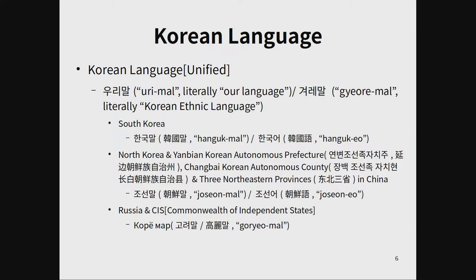Korean language is called 우리말 or 겨레말 in general. In South Korea it is called 한국말 or 한국어. In North Korea and the Yanbian Korean autonomous prefecture, it is called 조선말 or 조선어, and likewise in the three Northeast provinces in China and the Changbai Korean autonomous county. In the Russia and CIS region it is called Goryeomal.